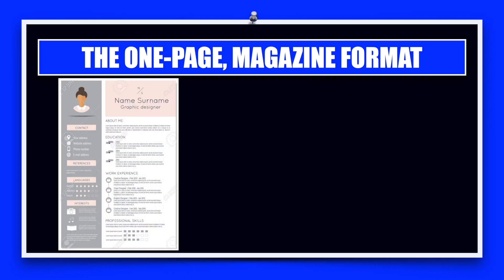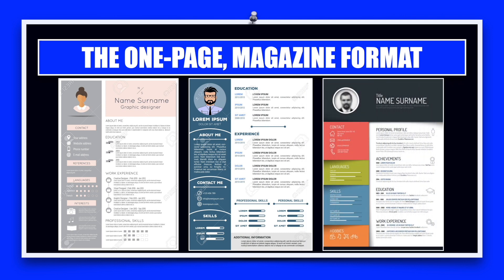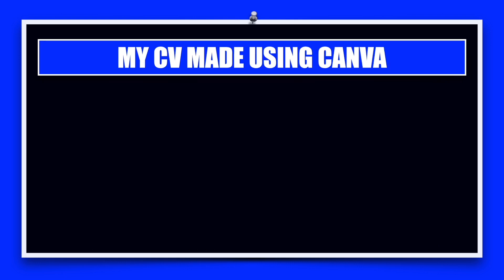In the next slide I have some samples of a one-page magazine format, curated from the internet, so you can see how almost all the space on the page has been utilized in two columns, just like in a magazine. Here is a second example, and here is a more colorful example. Depending on your taste, you can decide on a dual color or multiple colors in your resume.